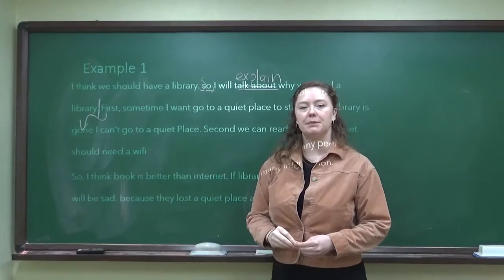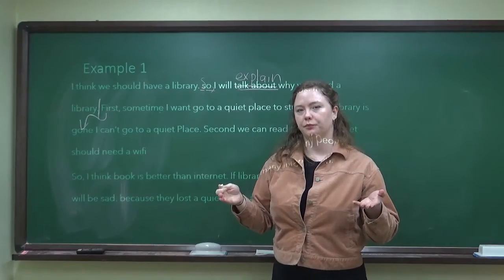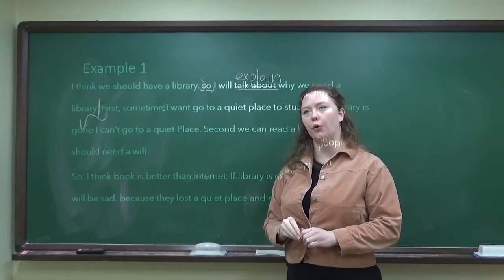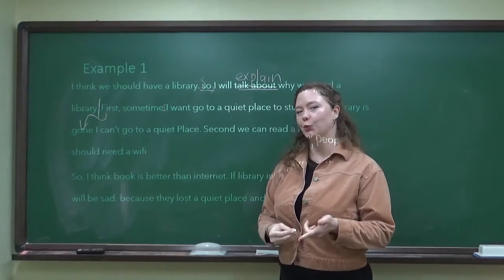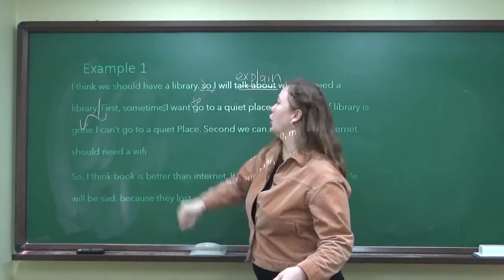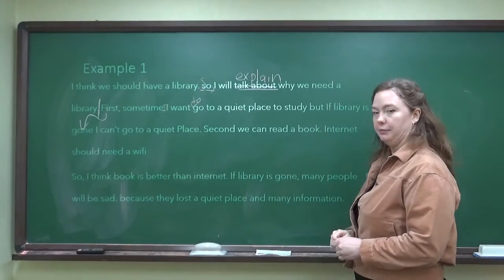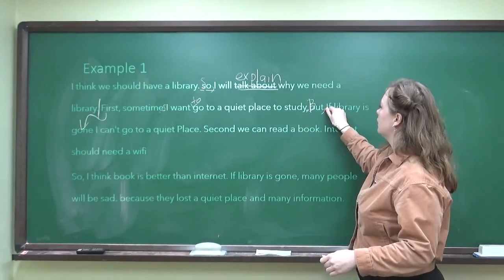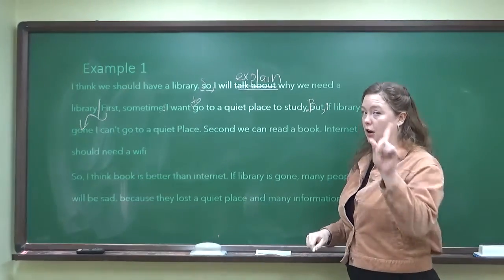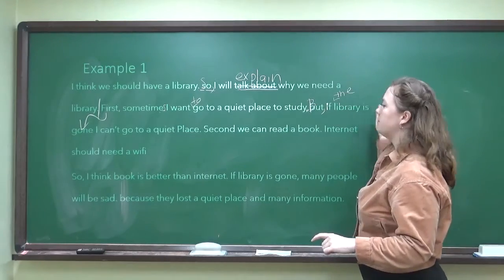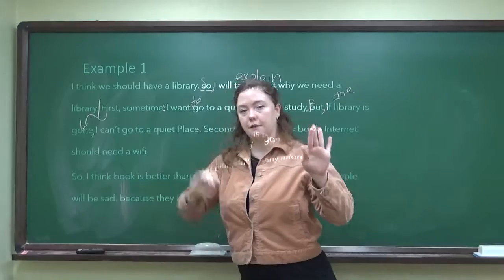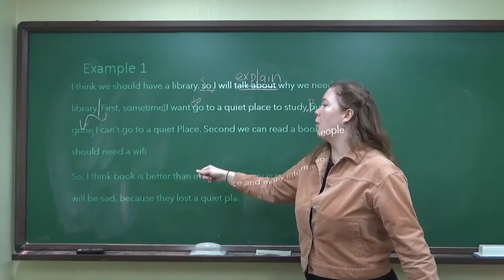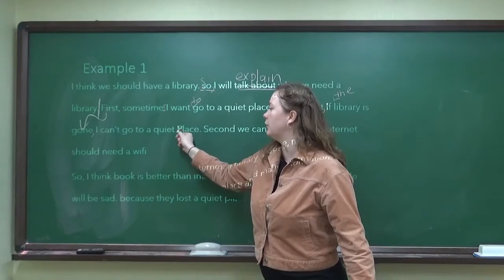'Sometime' — what's wrong with this? 'Sometimes.' Good. 'I want go' — do we say 'I want go'? No, we say 'I want to go,' 'I want to see,' 'I want to do.' 'To a quiet place to study' — that's a complete sentence, let's stop there. Capital B, 'But,' comma. 'If' — this should be a lowercase i, not a capital I. 'If the library is gone,' — then after an if-clause, you should have a comma: 'If the library is gone,' comma, 'I can't go to a quiet place.' Why is this P a capital letter? We don't need that — small p.